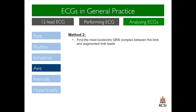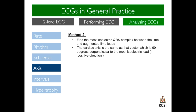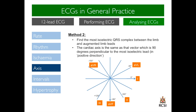The second method for calculating the cardiac axis involves isolating the most isoelectric QRS complex between the limb and augmented limb leads. By isoelectric, we mean that lead in which the R wave roughly equals the S wave. For example, imagine lead AVL is the most isoelectric lead. The cardiac axis is the same as that vector which is 90 degrees perpendicular to the most isoelectric lead in a positive direction. Taking this example, AVL is the most isoelectric lead, and the lead which is 90 degrees perpendicular to this is lead 2. If the R wave is greater than S for lead 2, the cardiac axis is plus 60 degrees.